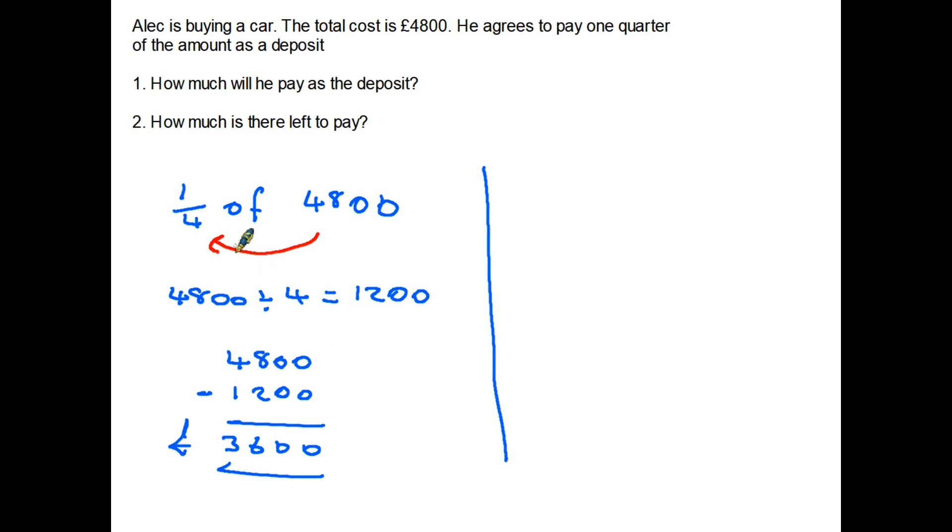Or you could have worked out that if the total price is 4,800 and he has paid one-quarter, that means he will have the other three-quarters left to pay. So we could do it by finding three-quarters of 4,800. So again, 4,800 divided by four is exactly the same as we did on the other side. It's 1,200. But this time we are looking for three-quarters. So now we are going to multiply that by three. So 1,200 times three is 3,600. And of course, we've come to the same answer. And it really doesn't matter which way round you do it.